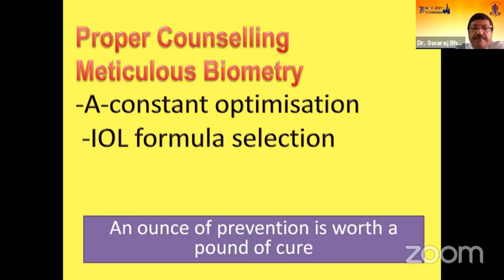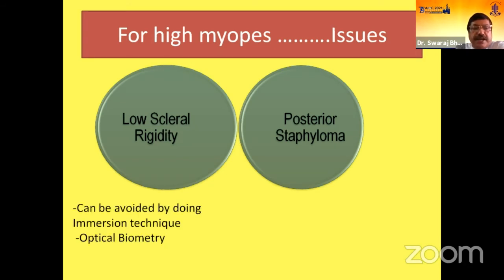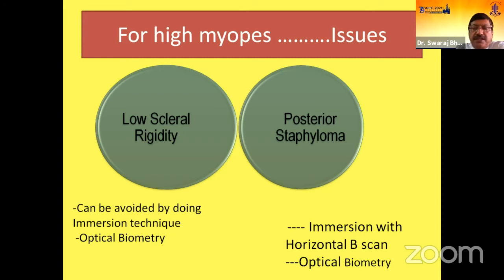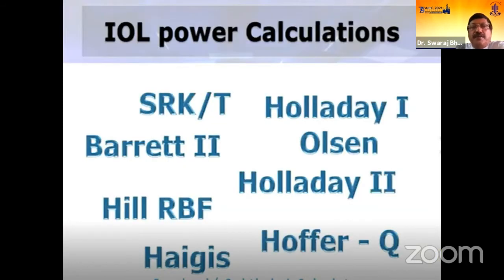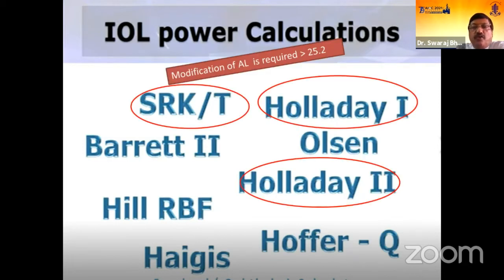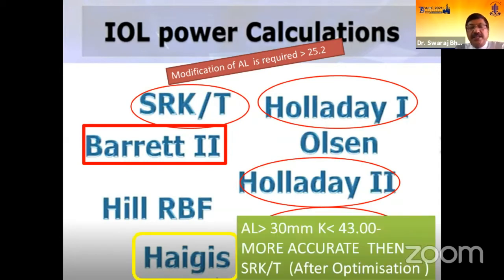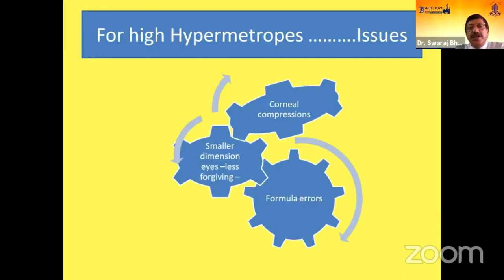We should remember: an ounce of prevention is worth a pound of cure. For high myopes, there is low scleral rigidity and posterior staphyloma. Low scleral rigidity can be addressed by using an immersion technique and optical biometry. For posterior staphyloma, use immersion with horizontal B-scan and optical biometry. For IOL power calculation, use the SRK-T formula, Holladay 1 and 2, and Hofer-Q. For axial length over 30 mm, use Haigis formula. For high hypermetropes, issues include corneal compression, smaller dimensions, less forgiving, and formula error.